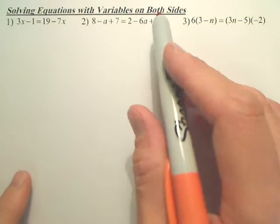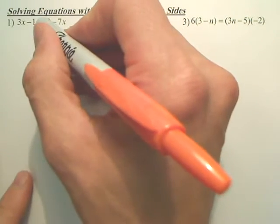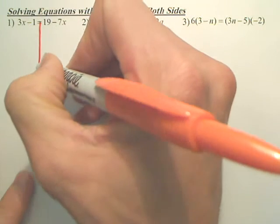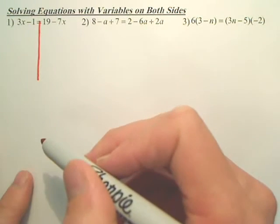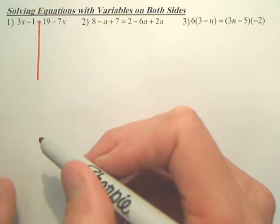We're solving equations with variables on both sides. A lot of times when you solve equations you don't have to, but sometimes it helps to make a line down the middle to separate the two sides.